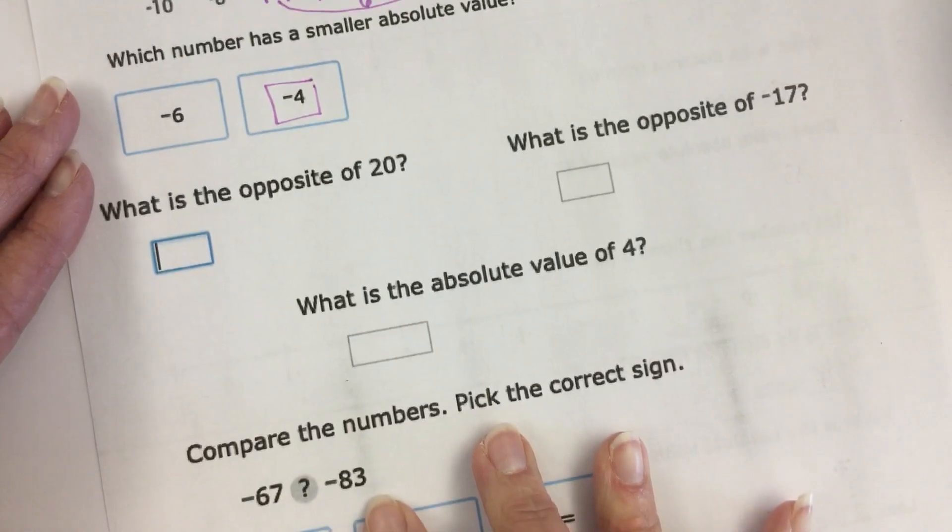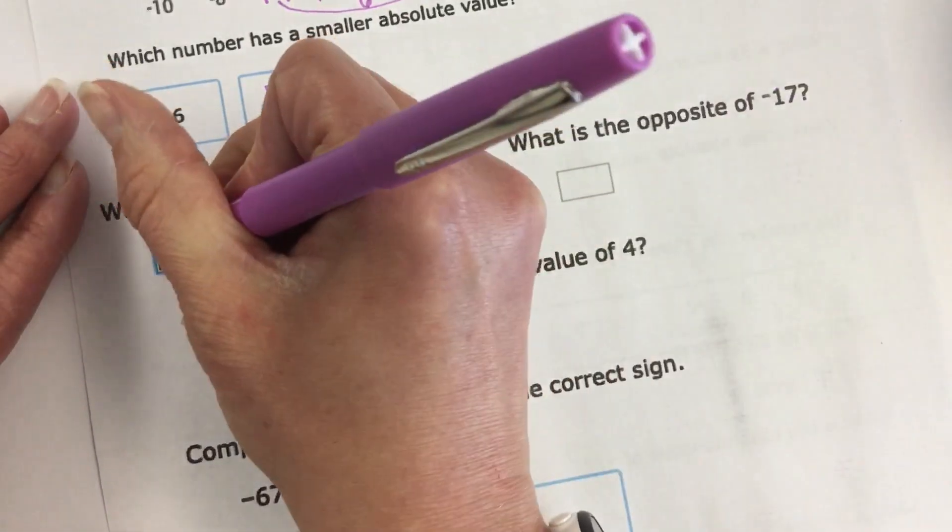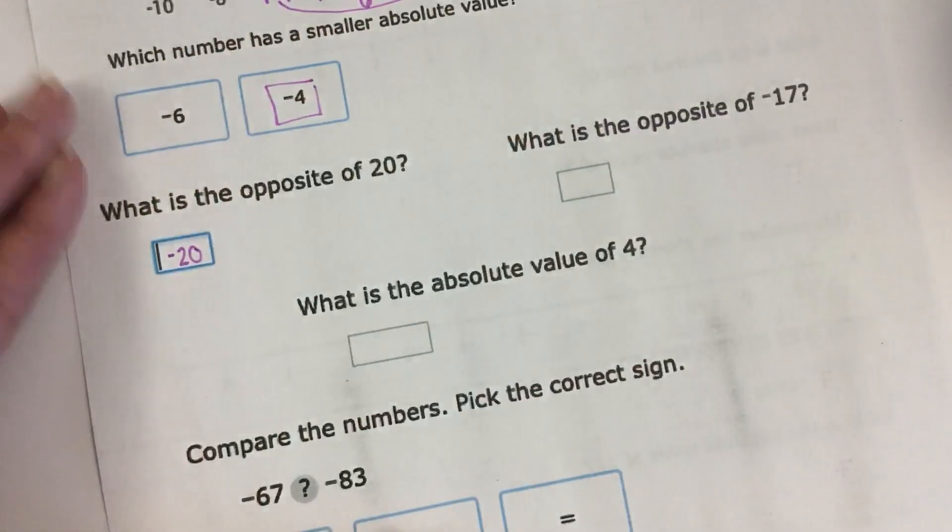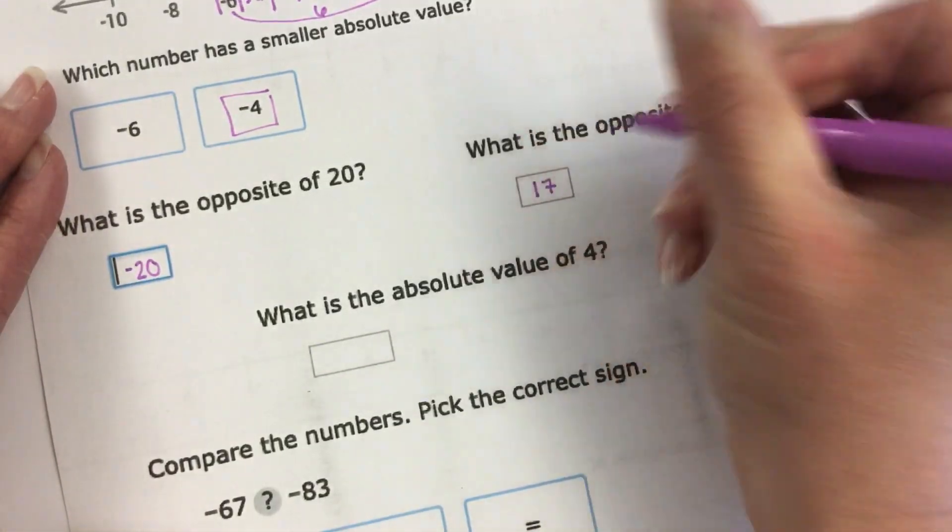The other words that you might hear are opposite. The opposite of positive 20 is negative 20. The opposite of negative 17 is positive 17.